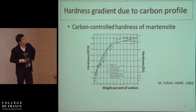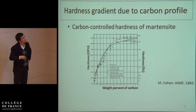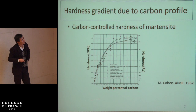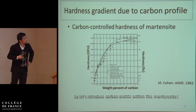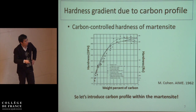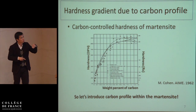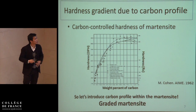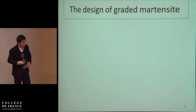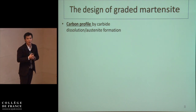Let's refer to a very early result of Morris Cohen in 1962. This result shows that the hardness of martensite is very sensitive to the carbon content up to 0.7%. This tells us an opportunity: if we can introduce a carbon profile within the martensite phase, then there is a possibility to introduce the corresponding hardness gradient within the martensite phase — a kind of graded martensite. But how to replicate it? We have to propose an approach: to start from a ferrite-carbide mixture, then we intercritically anneal so carbide will dissolve and austenite will form around the carbide.